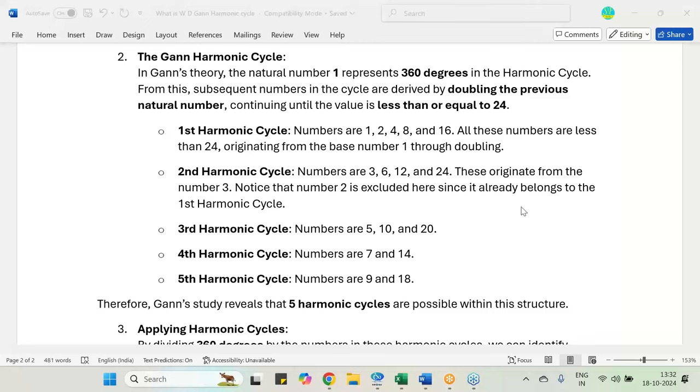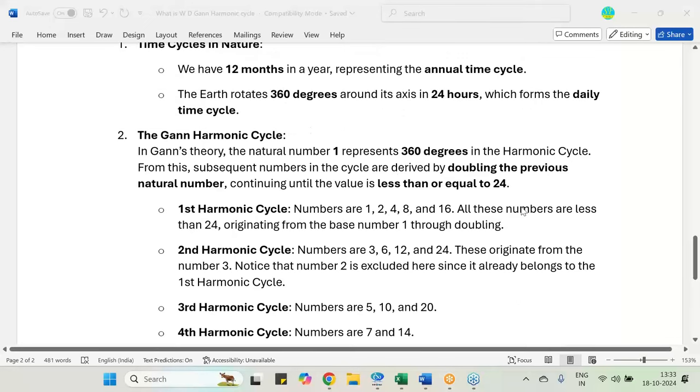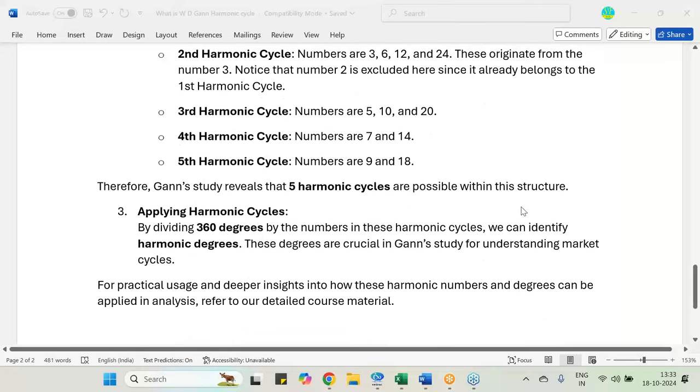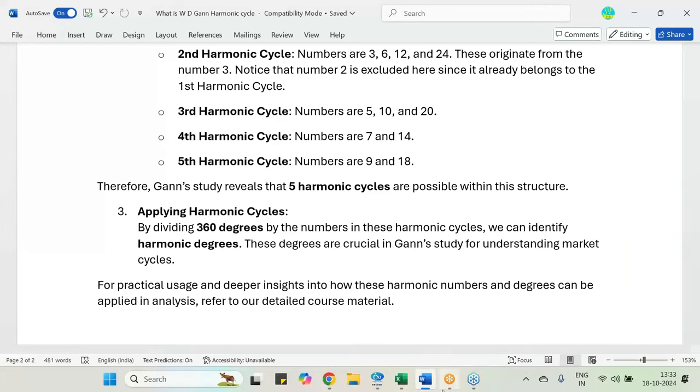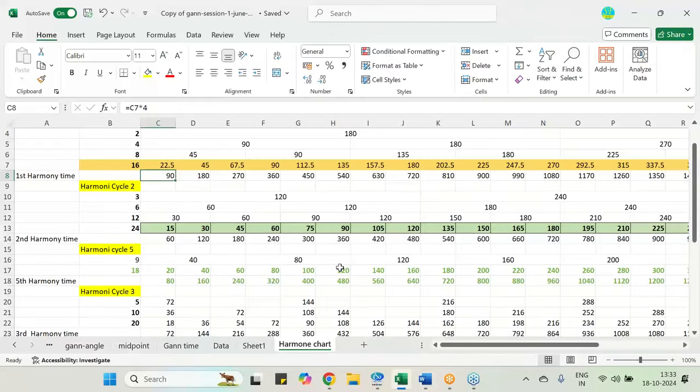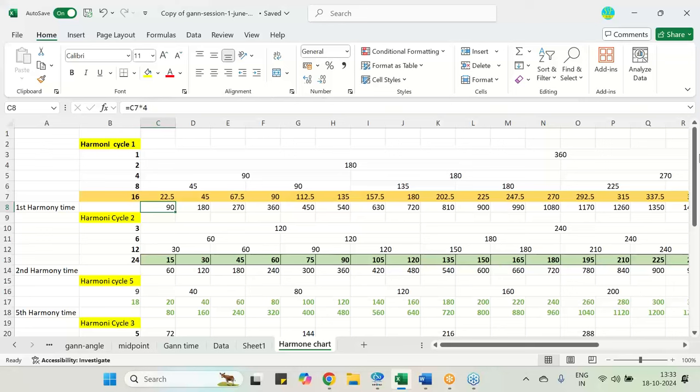There are only 5 harmonic cycles possible, and every harmonic cycle having a unique set of natural numbers starting from 1 to 24. Why 24? Because in a day we have 24 hours, which is daily time cycle. This is how it is harmonic cycle. Now this particular harmonic cycle, I am going to use with the 360 degrees. So now I just go to the excel and explain how these things are being linked to the degrees and time.